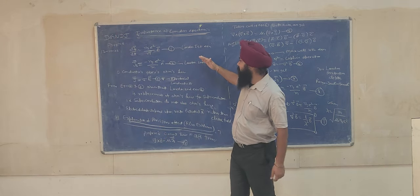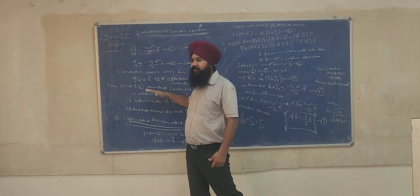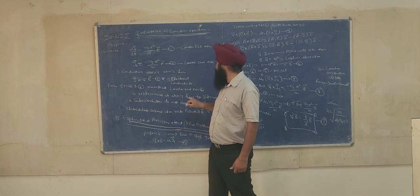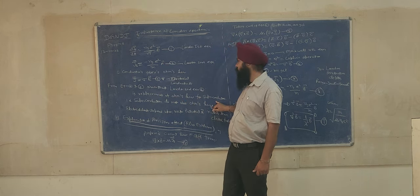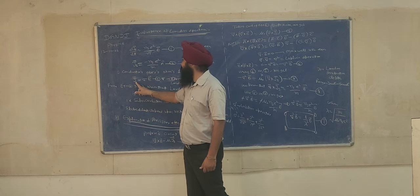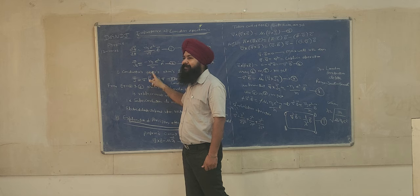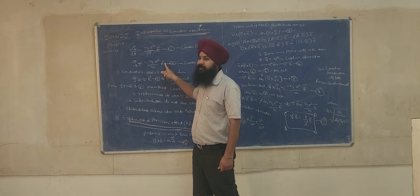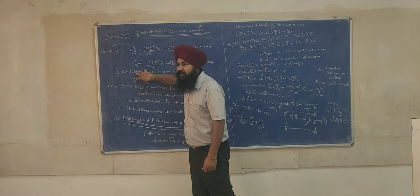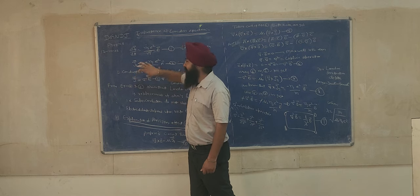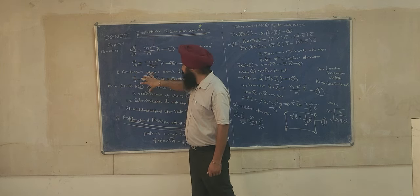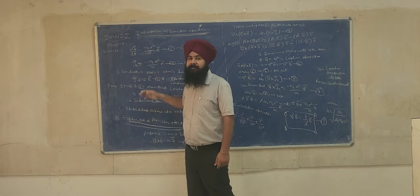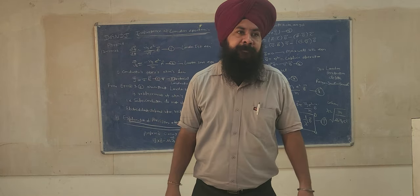If we compare equation number 2 and equation number 3, we can clearly say that the London second equation is the replacement of Ohm's law for a superconductor. Here, J is present in both; this term is the replacement of σ; and in place of E, we have A. This equation is valid for a conductor and this one for a superconductor.